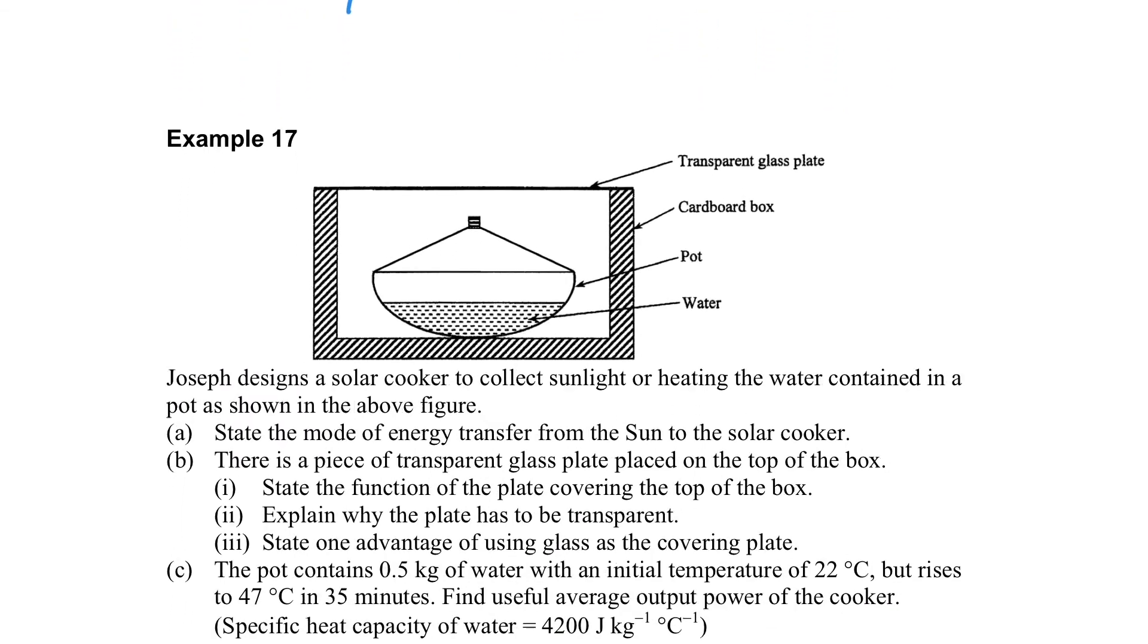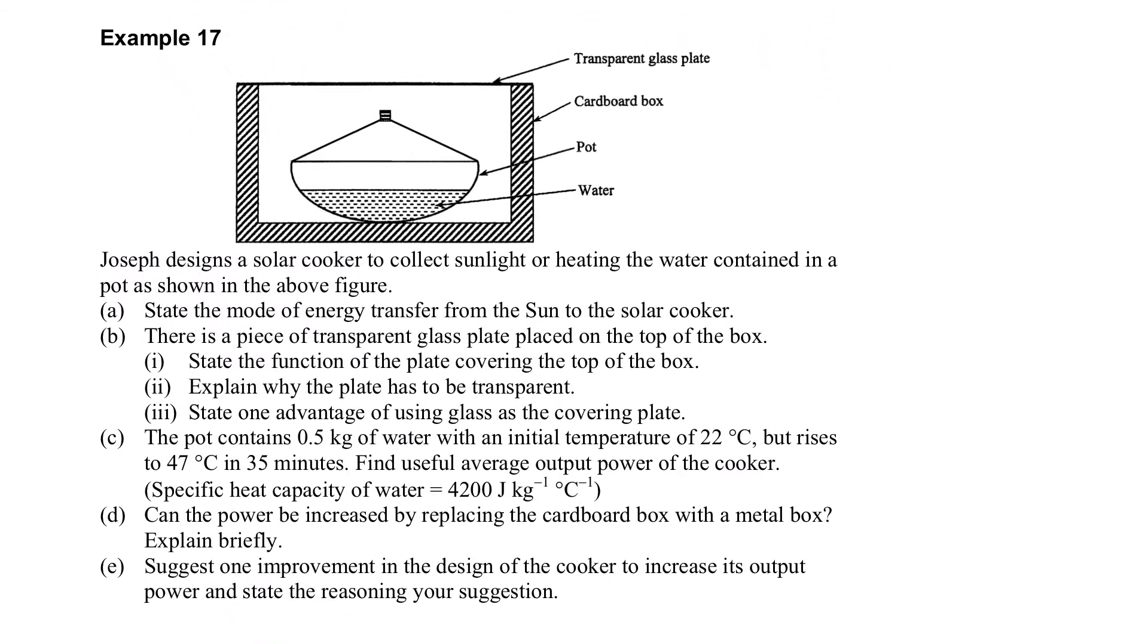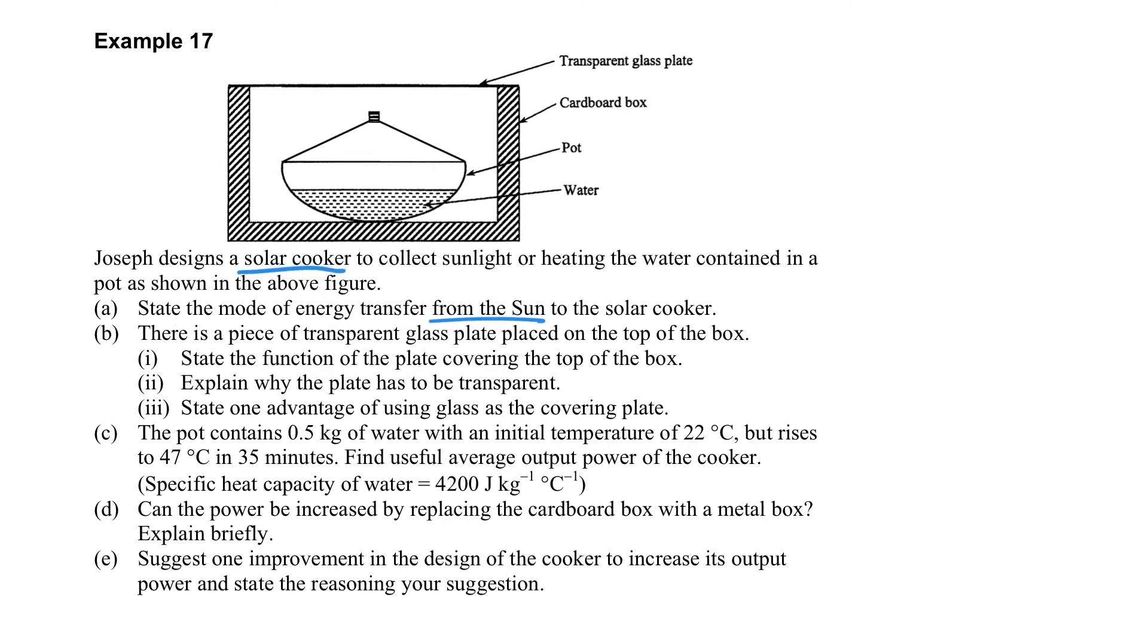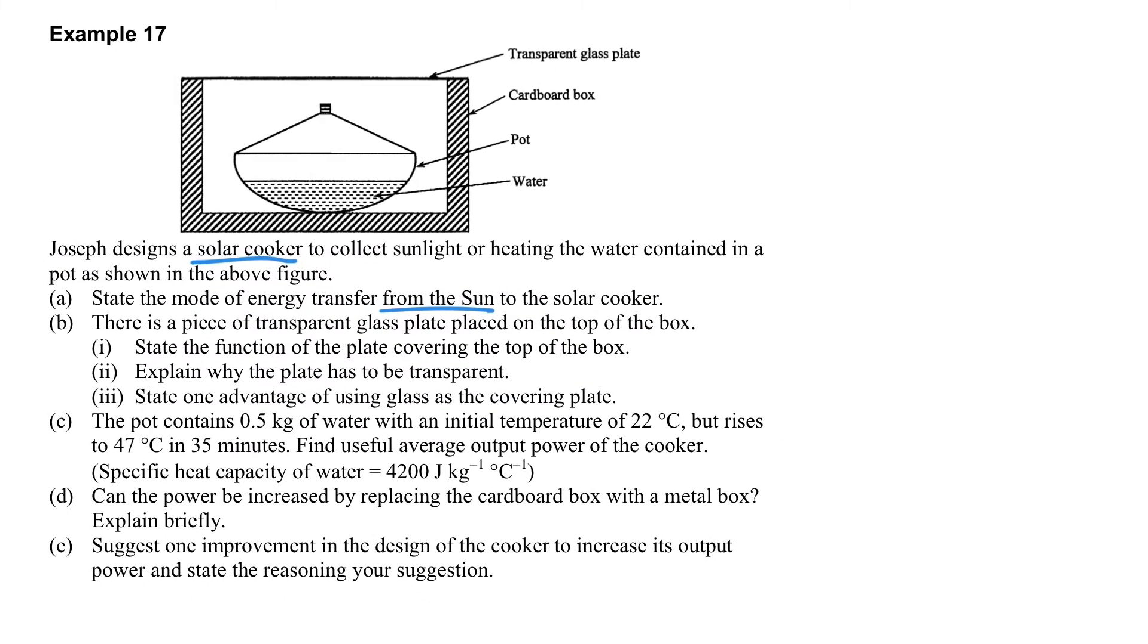Let's see another example which is another design of the solar heater. This solar heater you can see that there is a box and there is water put inside the pot with the cover. So let's see what is the mode of energy transfer from the Sun to the solar heater? Surely it is radiation because the Sun can only use radiation to reach the heater.